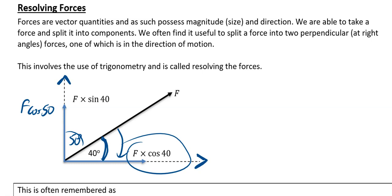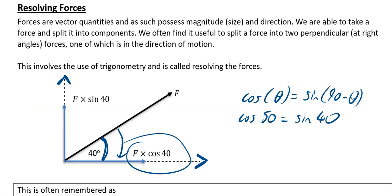Now there's a nice trick, and it's the fact that cos of theta is equal to sin of 90 minus theta. So for example, cos of 50 that we had is the same as sin of 40. So actually going vertically, we could just say that it is f sin 40.